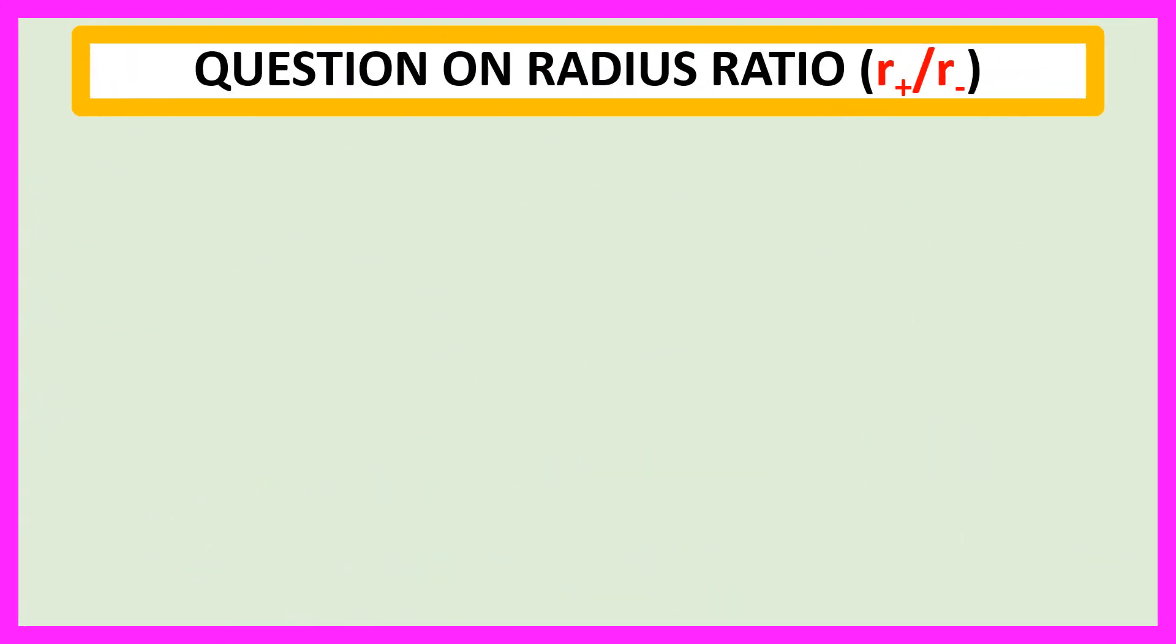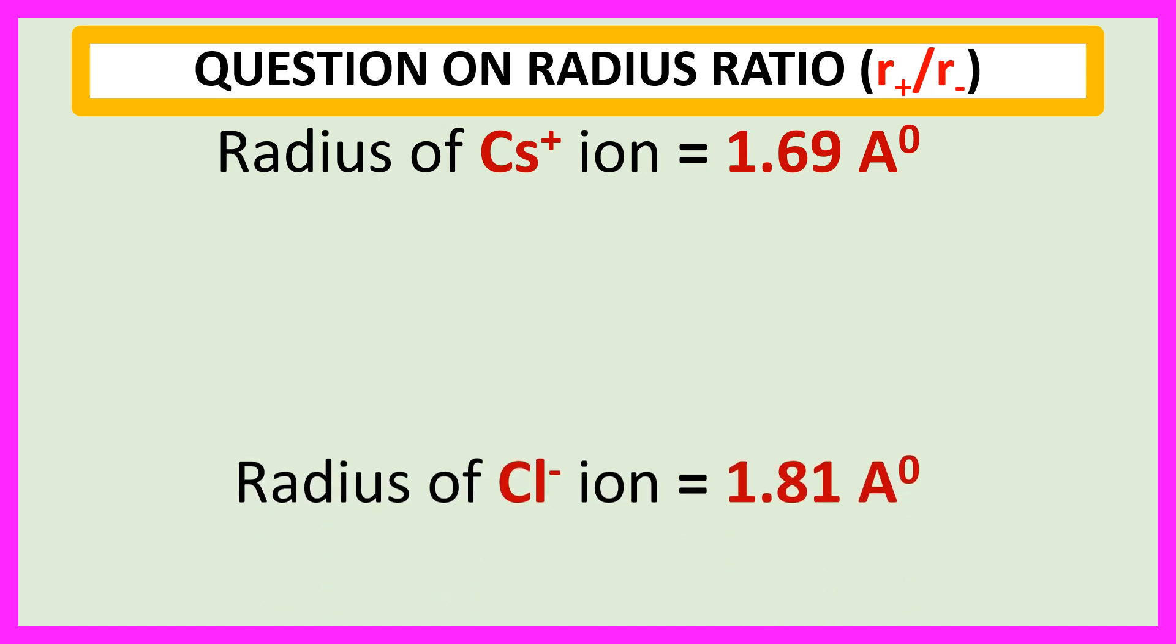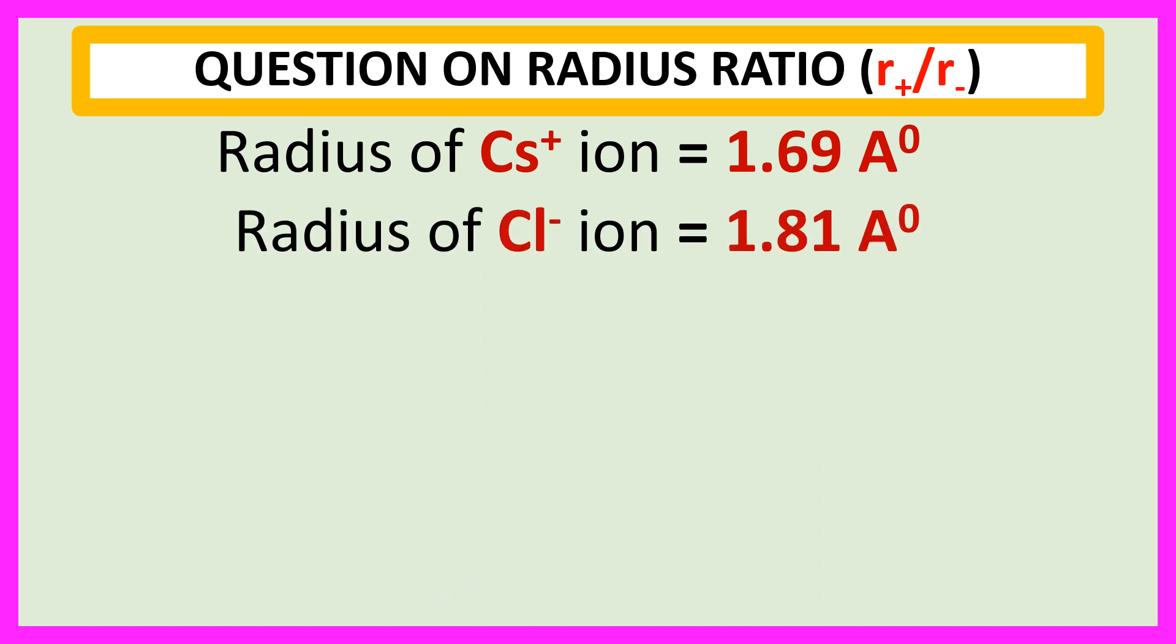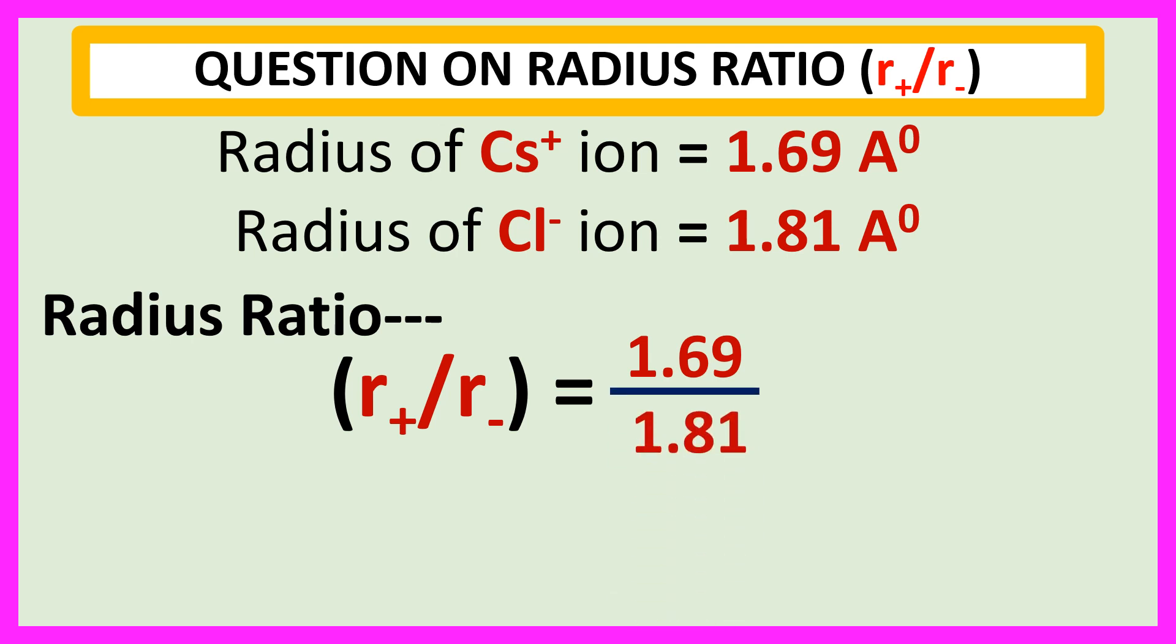Here given radius of Cs⁺ ion is equal to 1.69 angstrom and radius of Cl⁻ ion is equal to 1.81 angstrom. So, radius ratio that is r₊/r₋ is equal to 1.69. This is the radius of Cs⁺ ion by 1.81.